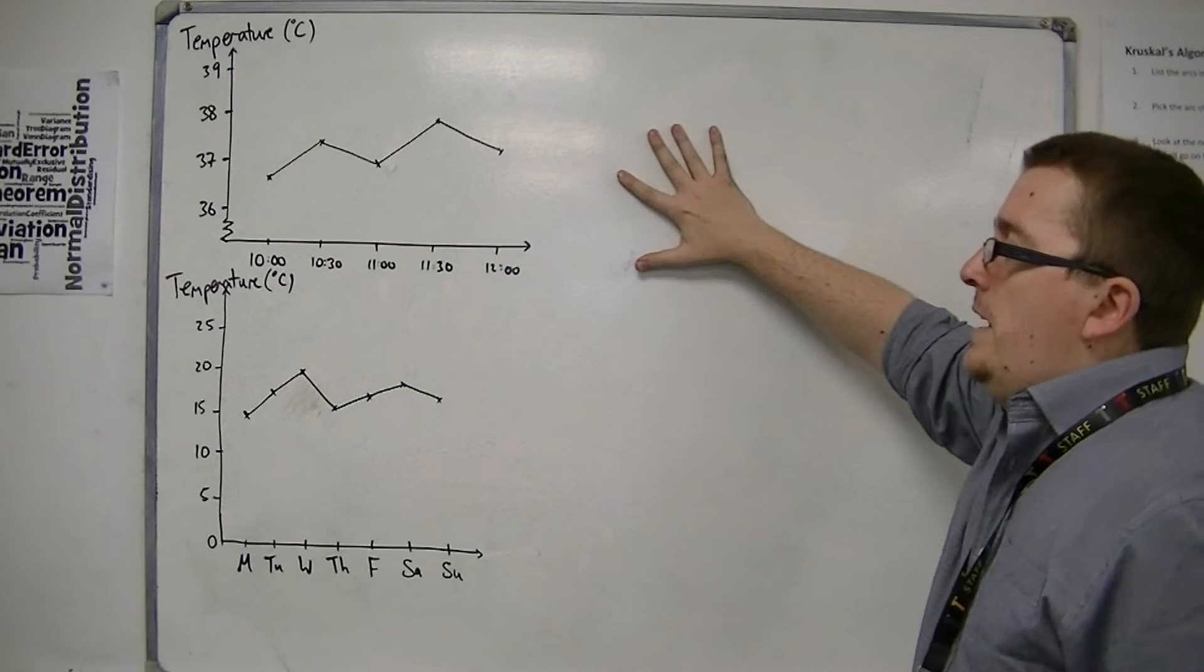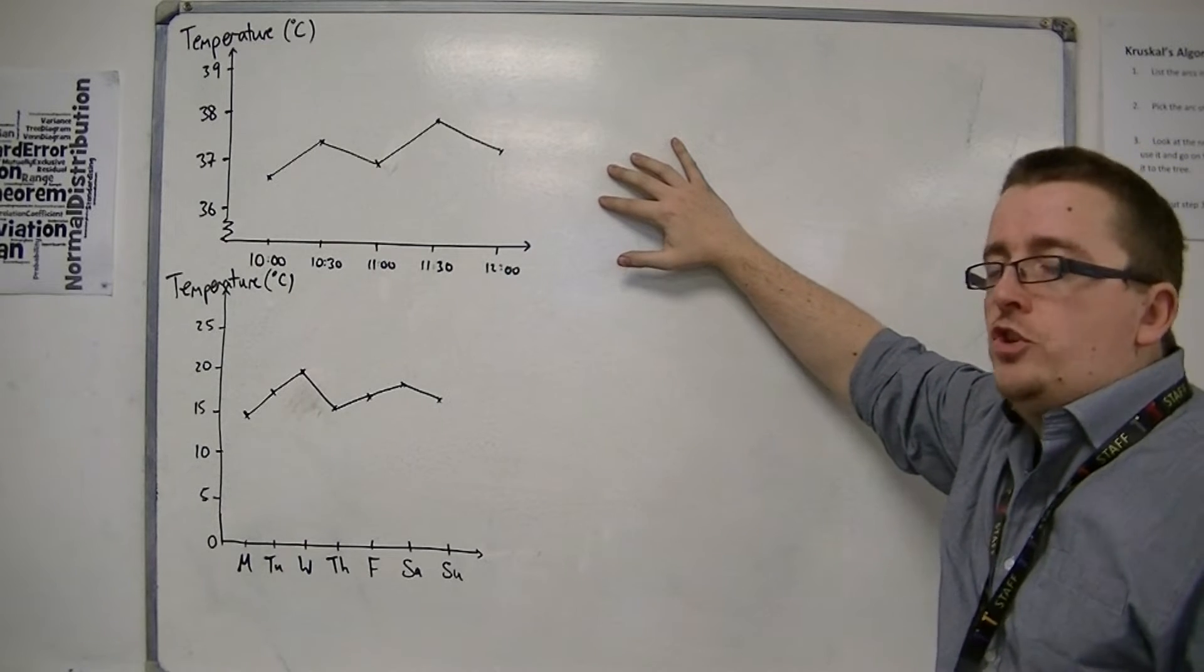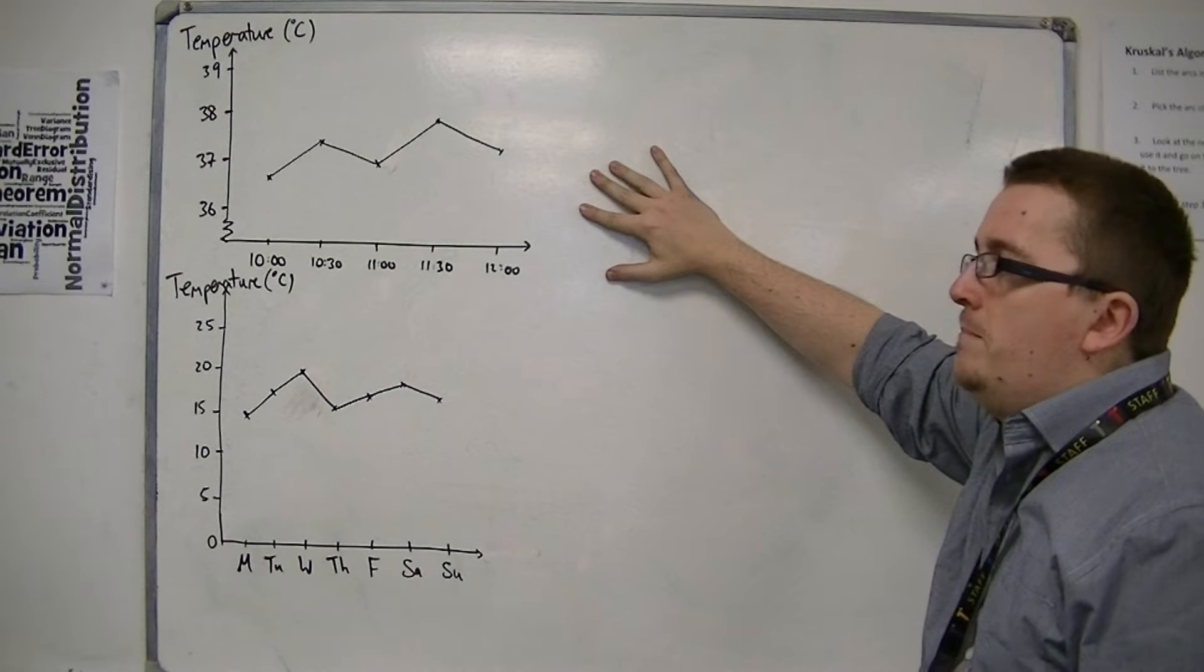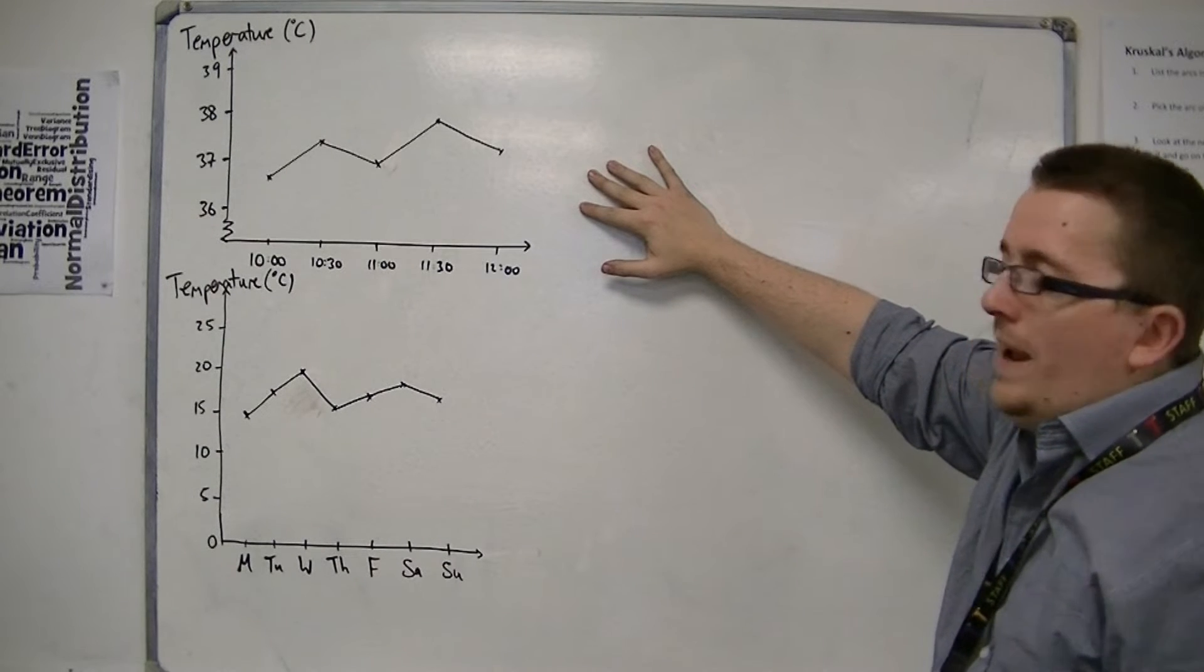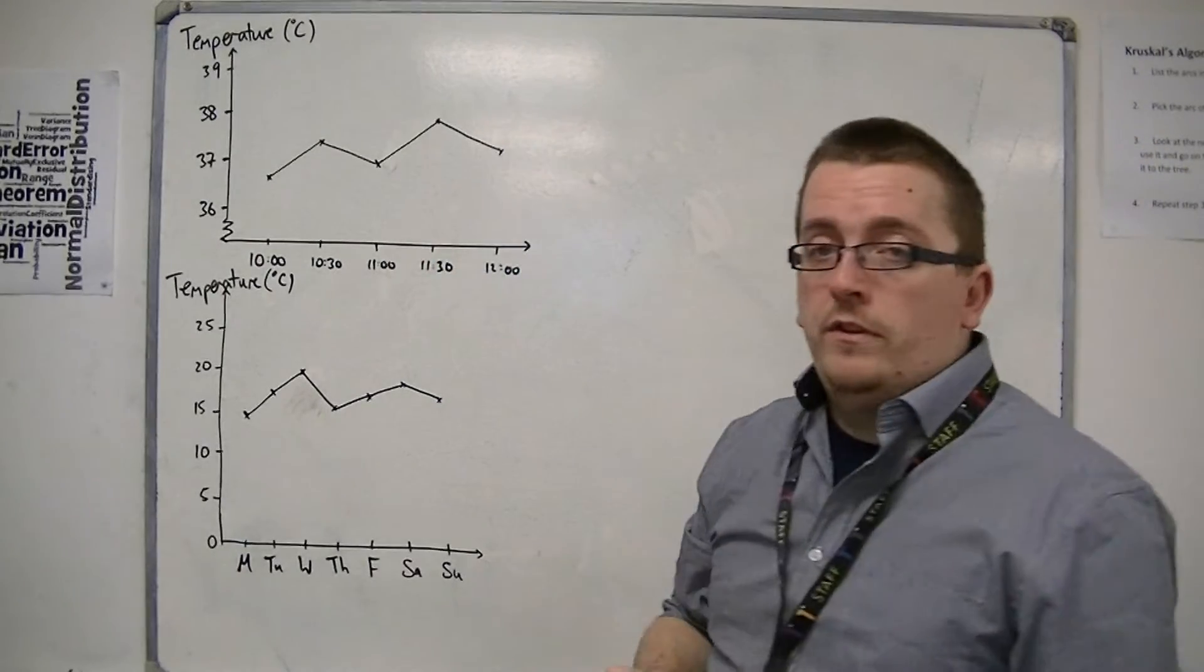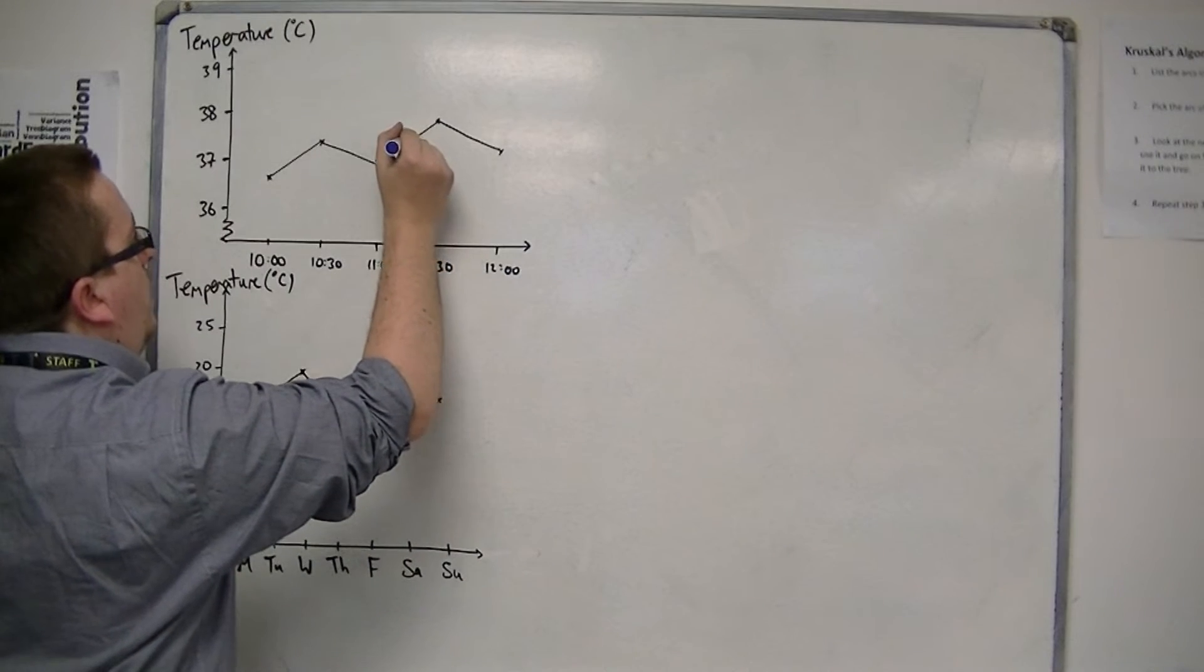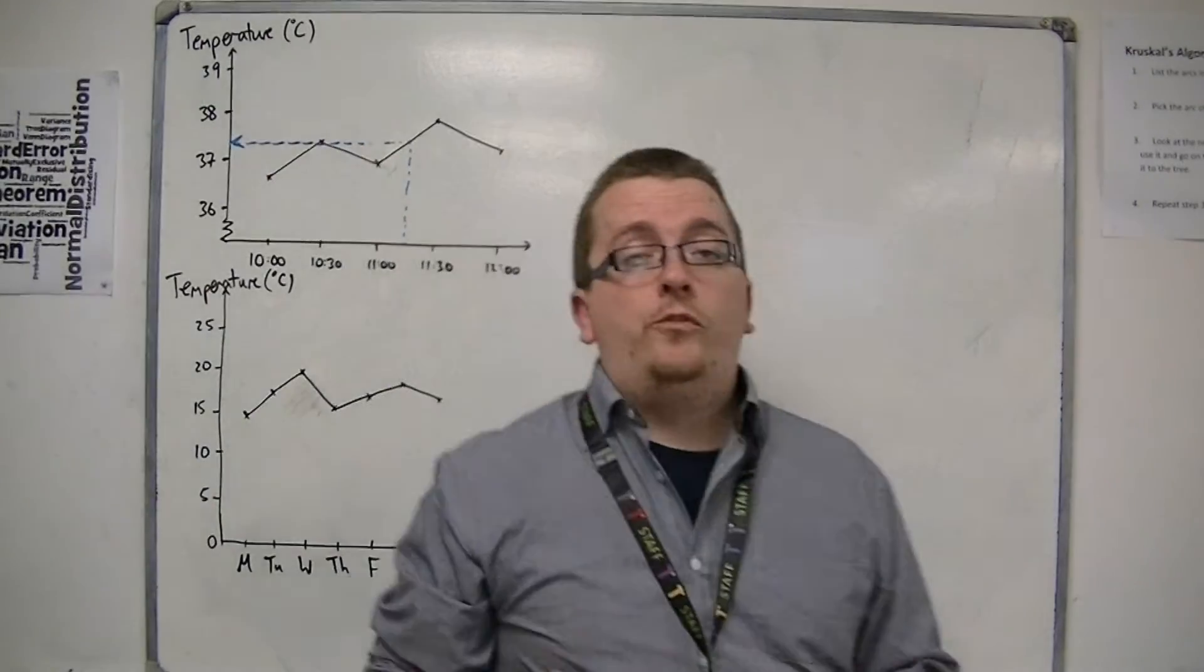Now, the really more challenging question is an extrapolation problem. For this type of problem, where you've got the patient's temperature being measured every half an hour, you might be asked to estimate the patient's temperature at quarter past 11 for example. And that seems fairly reasonable. Okay? So we go up to the graph, go along, and then read off our answer. That seems fairly reasonable.